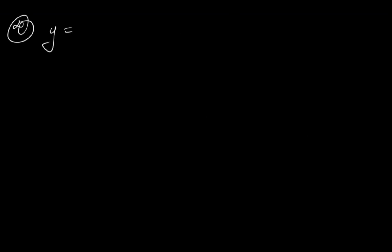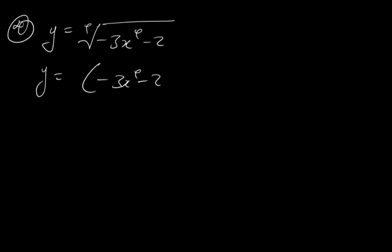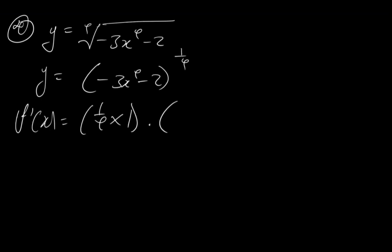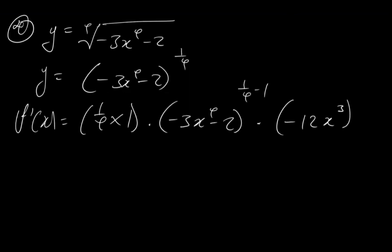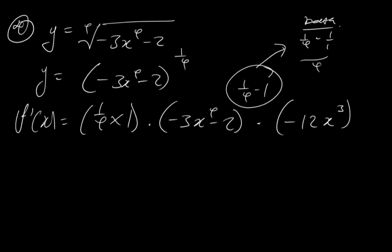Let's look at an interesting question. Say we have y being equal to the fourth root of (minus 3x to the fourth minus 2). Before we apply the chain rule, we can put this in a manipulative way where y is equal to (minus 3x to the fourth minus 2) to the power of 1 over 4. Now applying the chain rule: f prime of x is equal to n times c, so this is 1 over 4 times 1, times (minus 3x to the fourth minus 2) to the power of 1 over 4 minus 1, times the derivative of something. Applying the power rule gives minus 12x to the third. Computing 1 over 4 minus 1 gives you 1 minus 4 over 4, which is minus 3 over 4. So that's the new power.